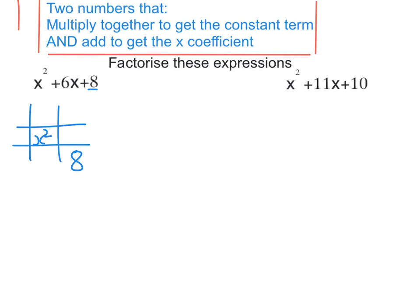Now what we're going to do, as it says at the top here, is we're looking for two numbers that multiply together to get the constant term, so in this case that's 8. And those two numbers also need to add to get the coefficient of x, and that case is 6. So we're looking for two numbers that times to get 8 but add to get 6.